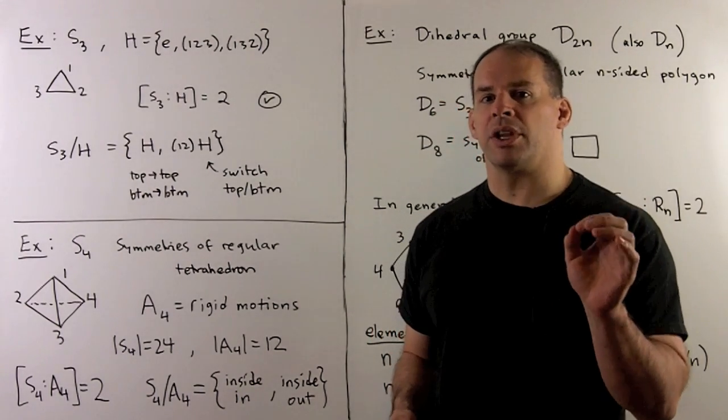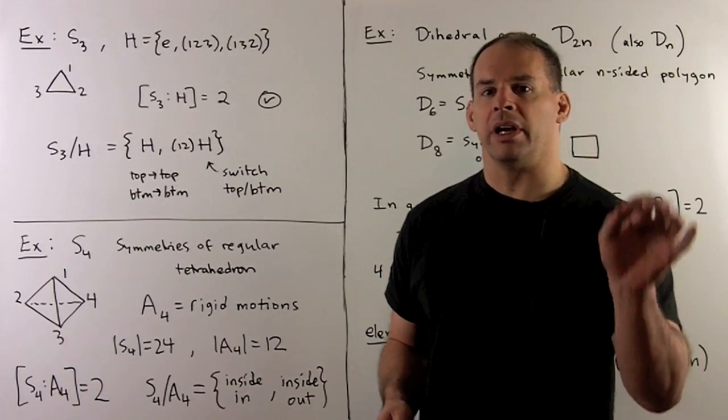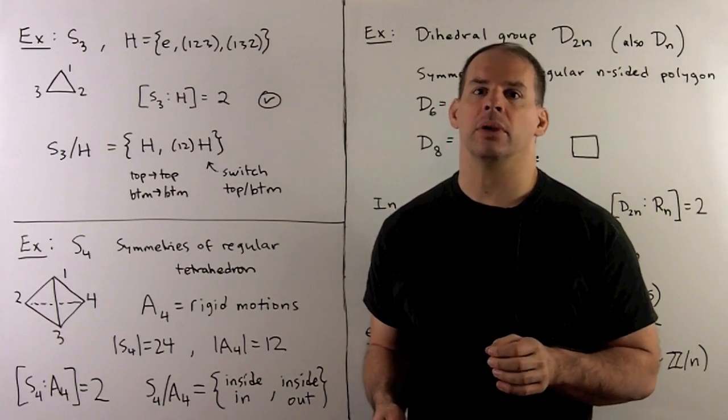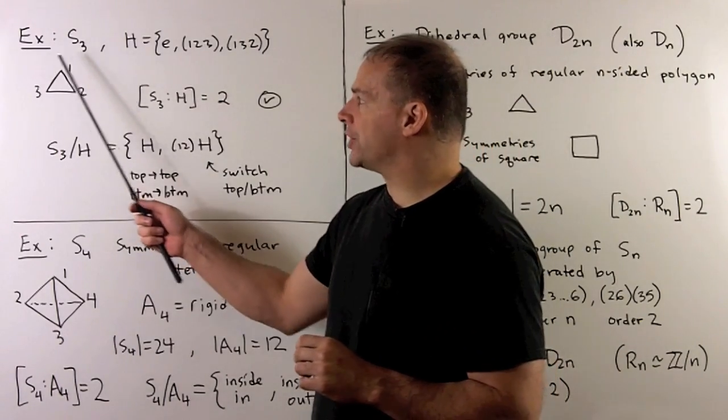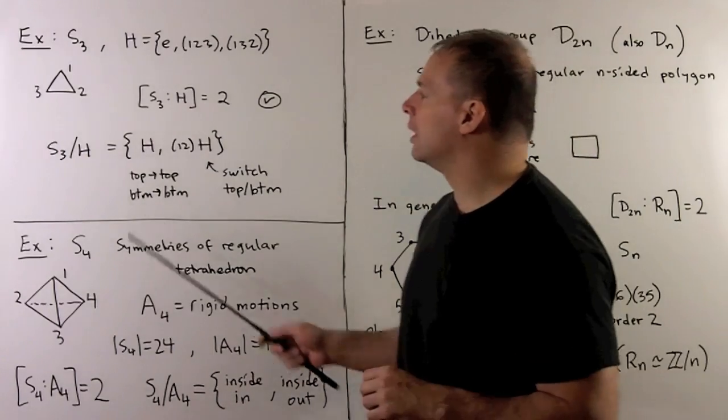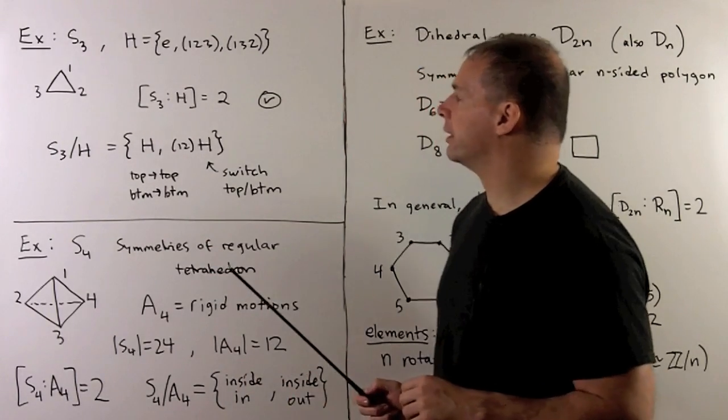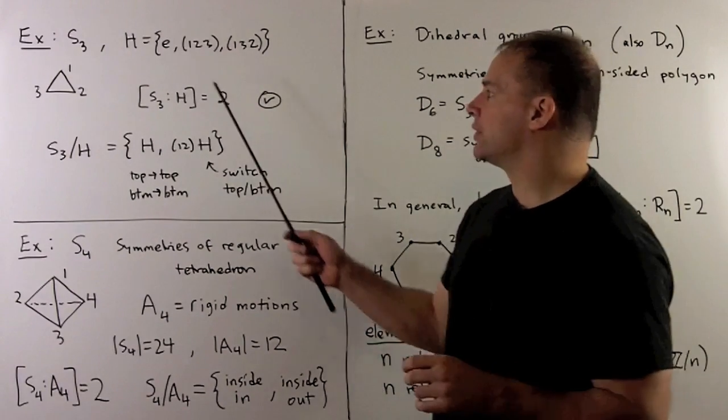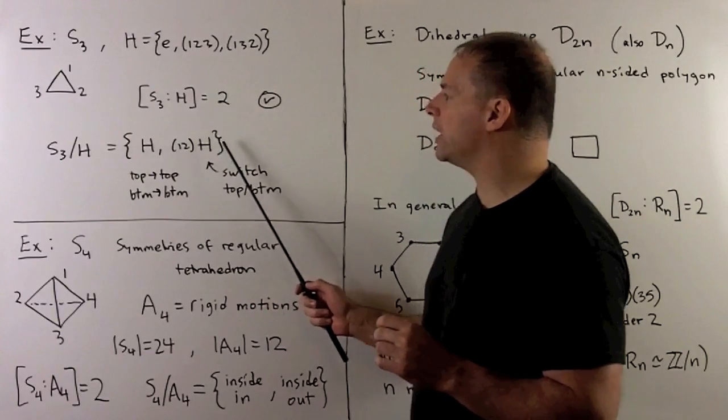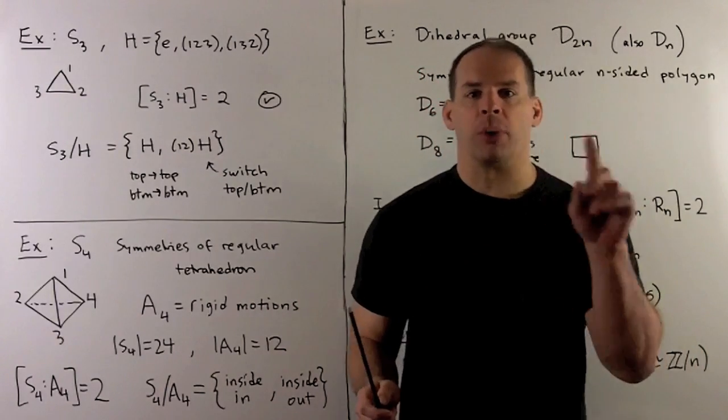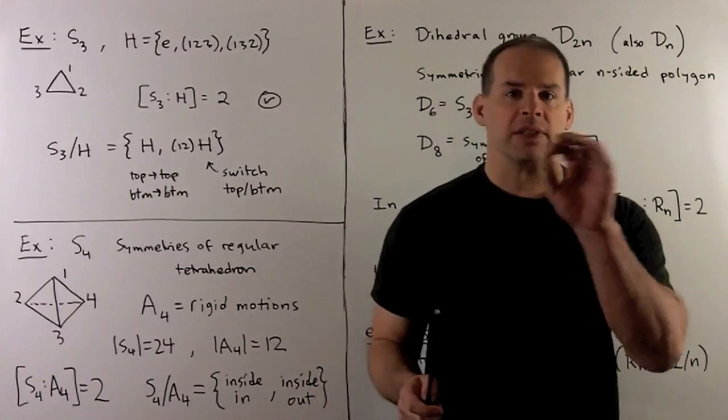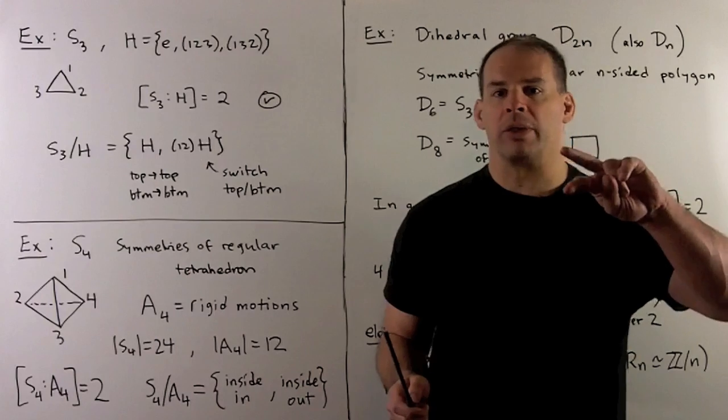We should only consider non-abelian examples. If we're working in an abelian group, then all of its subgroups are normal and we don't need the index two theorem. First, we have our familiar example S3, symmetries of equilateral triangle labeled 1, 2, 3 at the vertices. We take the rotation subgroup, that's three elements, so the index is two. We have H and (1,2)H. The way we interpret our cosets: the elements carry the top to the top, bottom to the bottom, or they interchange the two.